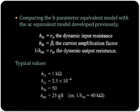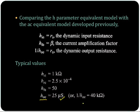HOE is equal to 25 micro Siemens — this is the admittance HOE. So the output impedance is 1 by HOE, and its typical value is 40 kilo ohm — a very high output dynamic resistance.